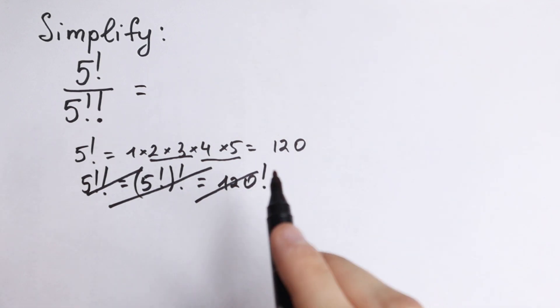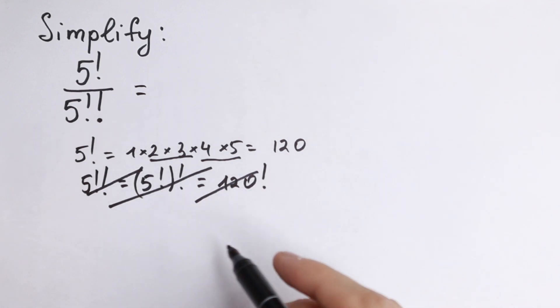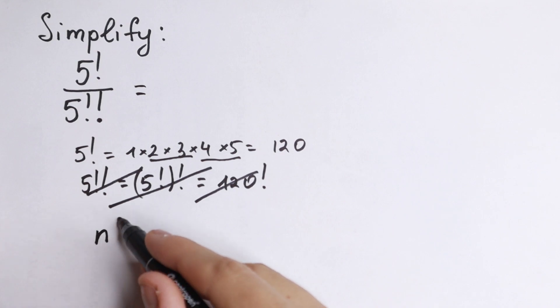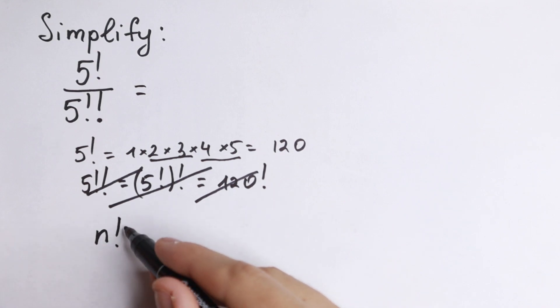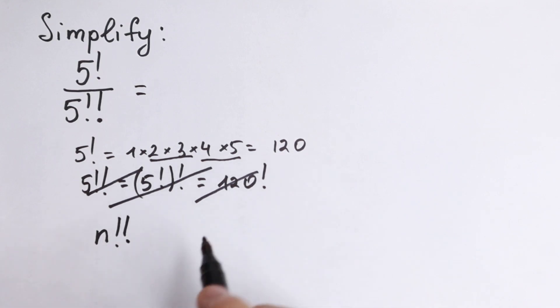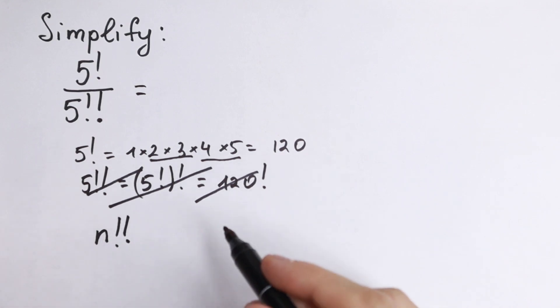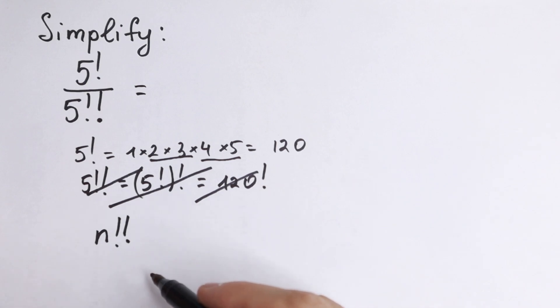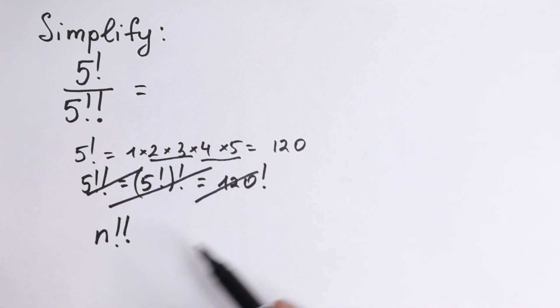In mathematics, the double factorial of a number n, denoted by n with double factorial sign, is the product of all positive integers up to n that have the same parity — odd or even — as n.